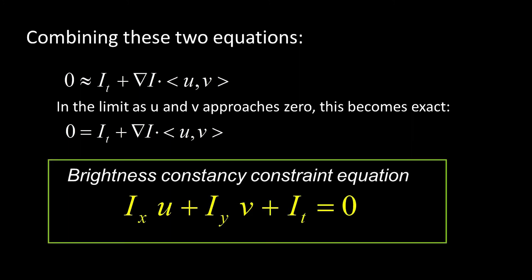And that, written out either above as a gradient or here in algebraic form, that's the brightness constancy constraint equation. Say that five times fast. Brightness constancy constraint equation. All right, i x u plus i y v plus i t equals zero.